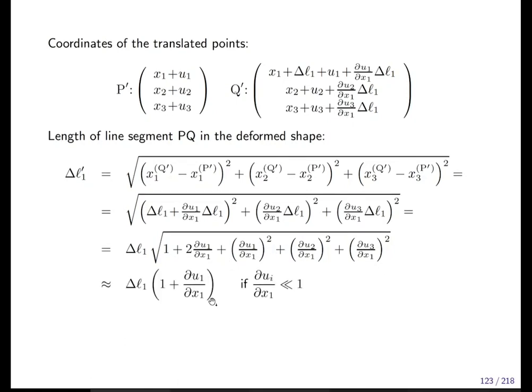Much smaller than one. Much is enough, and we can ignore the second power terms and only work with the first. Okay, this is written now in the mathematical form. Now Δl₁ prime is the same as Δl₁—that's the first term—plus the change of Δl₁. So the partial derivative has the meaning of a change of length.